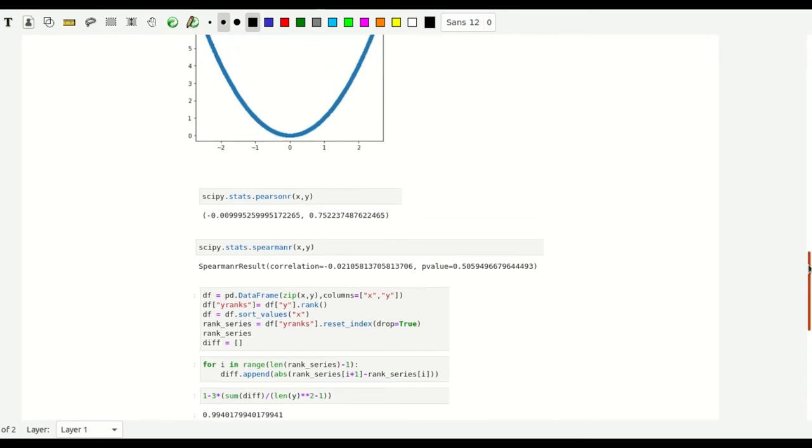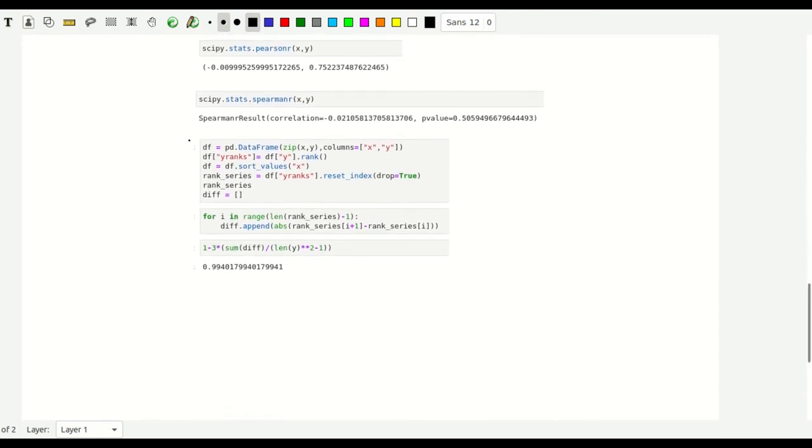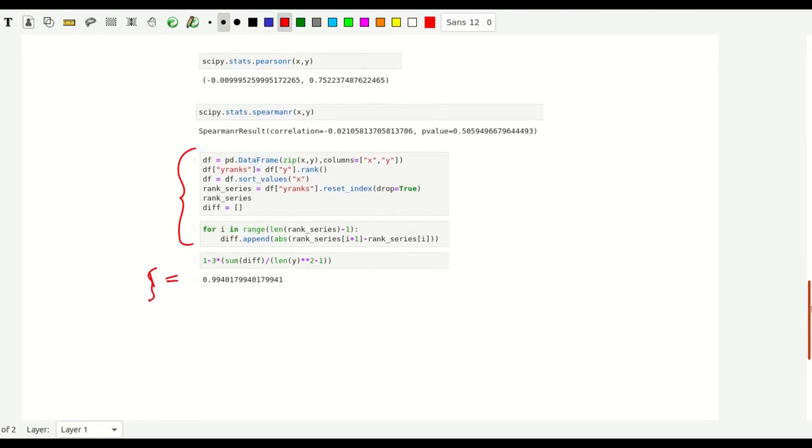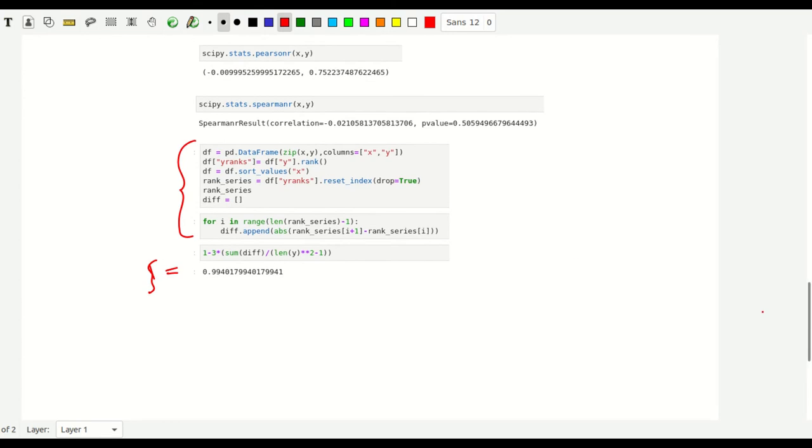is basically zero because there's no linear correlation and also the Spearman r is pretty small. But if we look into, so all of this is basically the xi, the code for xi. So the xi equals 0.994. So it's super high. It's almost one. And this is basically the nice thing about this coefficient of correlation, that